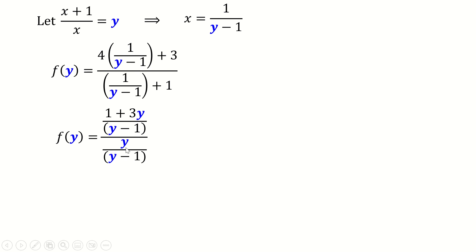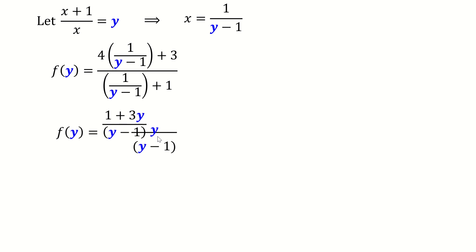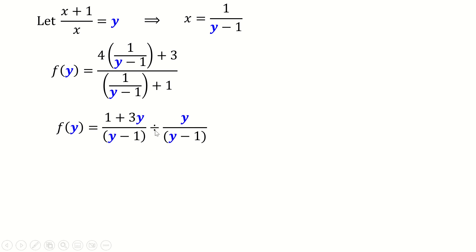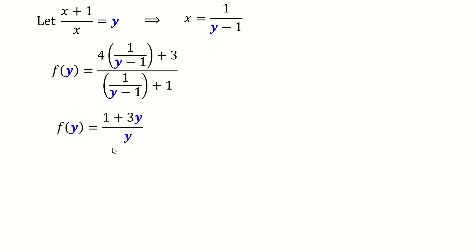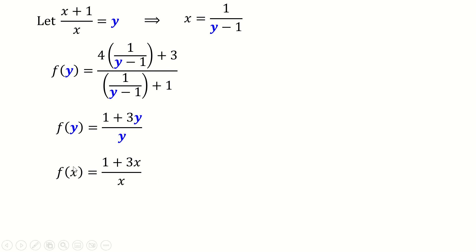We now have a fraction divided by a fraction, so we change division to multiplication and flip the second fraction. The (y−1) terms cancel, leaving f(y) = (1+3y)/y. Replacing y with x, we get f(x) = (1+3x)/x.